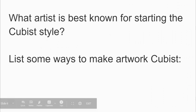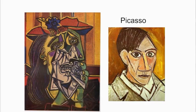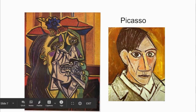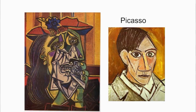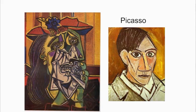Any guesses as to who the artist is best known for starting cubism? Pablo Picasso. Just like with any art style, there's a range from realistic to extra abstract. This is a self-portrait of Pablo Picasso that's more on the realistic side — it looks like him, it's more of a caricature but you could totally pick him out.